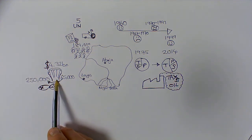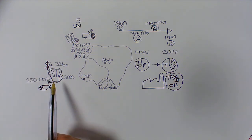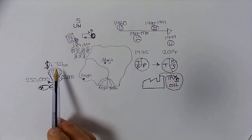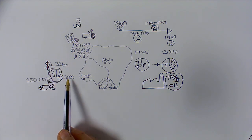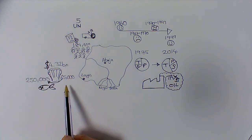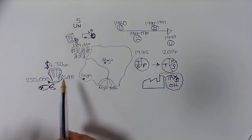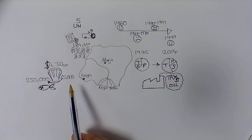Secondly, Shell, Royal Dutch Shell, is a Dutch company. So the profits don't stay in Nigeria. Yes, they give them tax, but the profits go to where that company is based, in Holland. So there's always two sides to every story. Good things and bad things to remember.